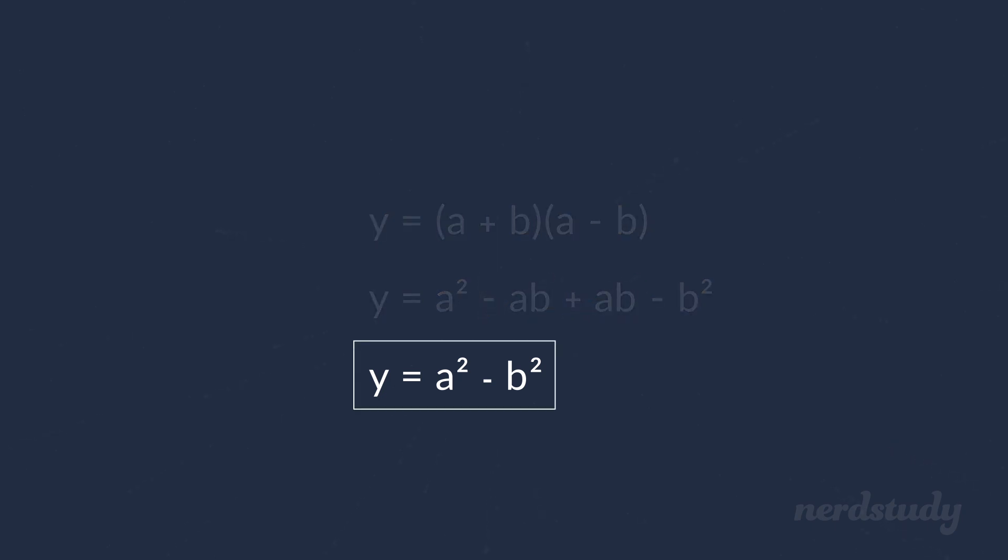this simplifies down to a squared minus b squared since the two middle terms cancel each other out. Now, this right here is what we call the difference of squares.